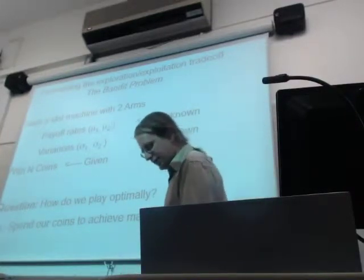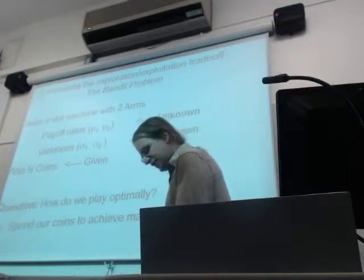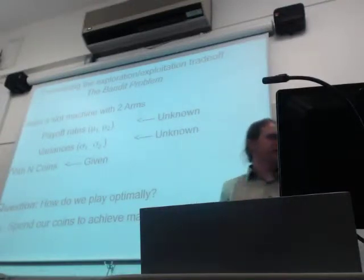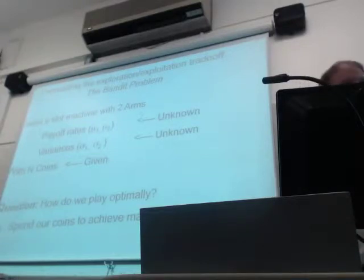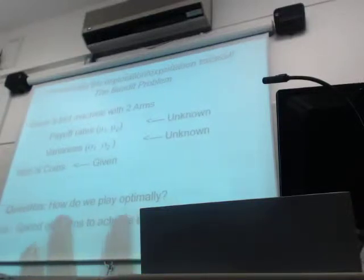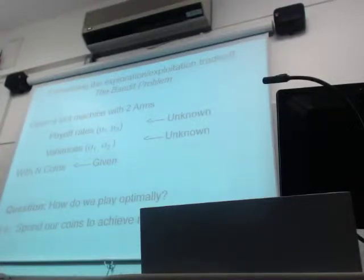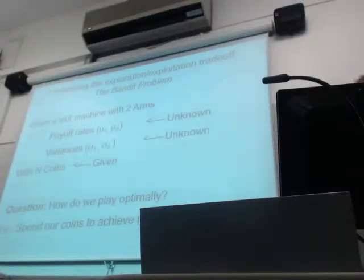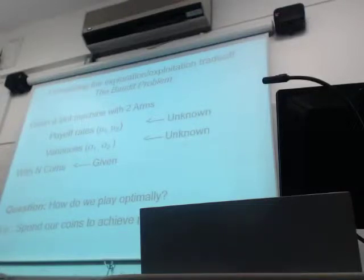Holland's vision of the genetic algorithm didn't necessarily have to do strictly with optimization. It was more about thinking of a system that lived in an environment and adapted to it. We mostly use a GA now in terms of optimization, but we'll still use Holland's argument to understand where a GA is supposed to be good.